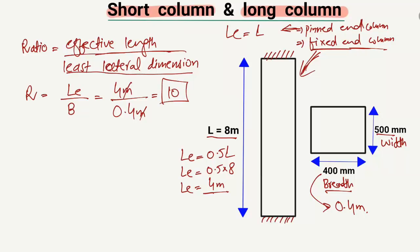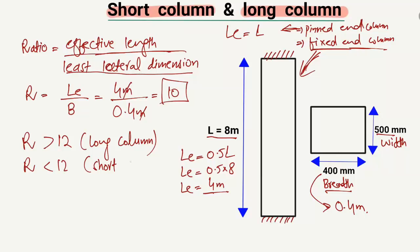When the ratio r is greater than 12, we call that column a long column. When r is less than 12, we call it a short column. In our case, r equals 10, which is less than 12, so our column is a short column.